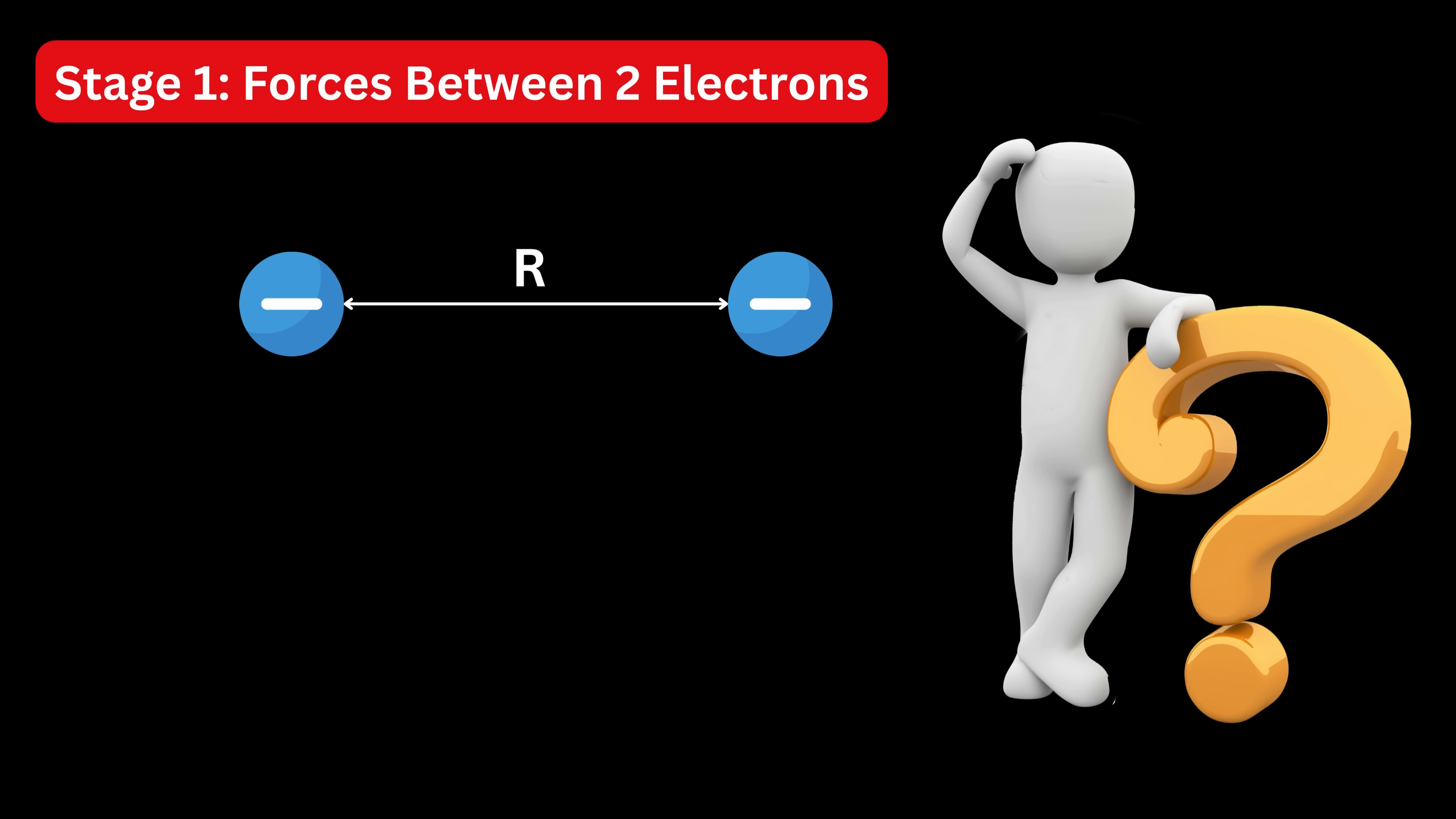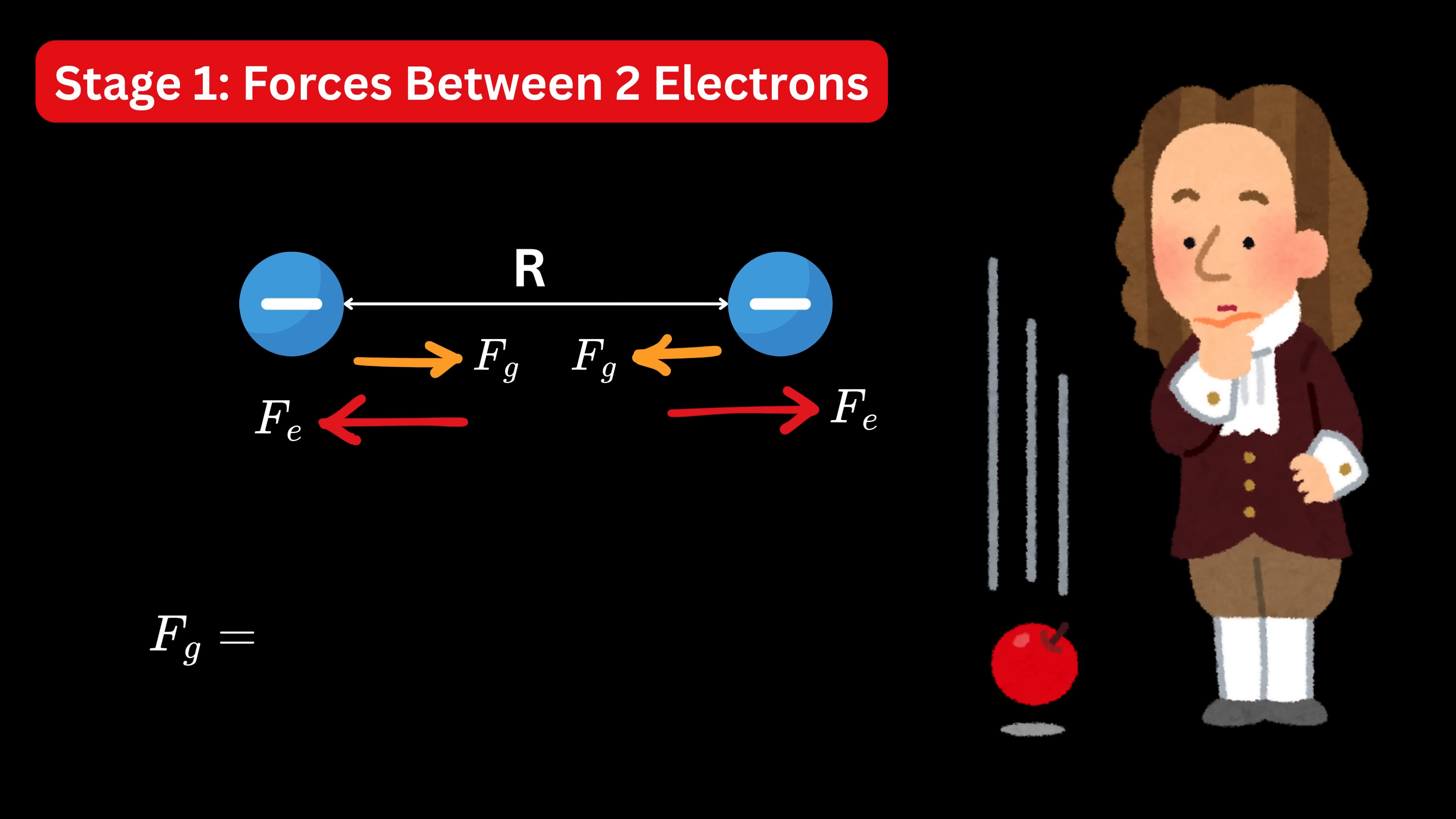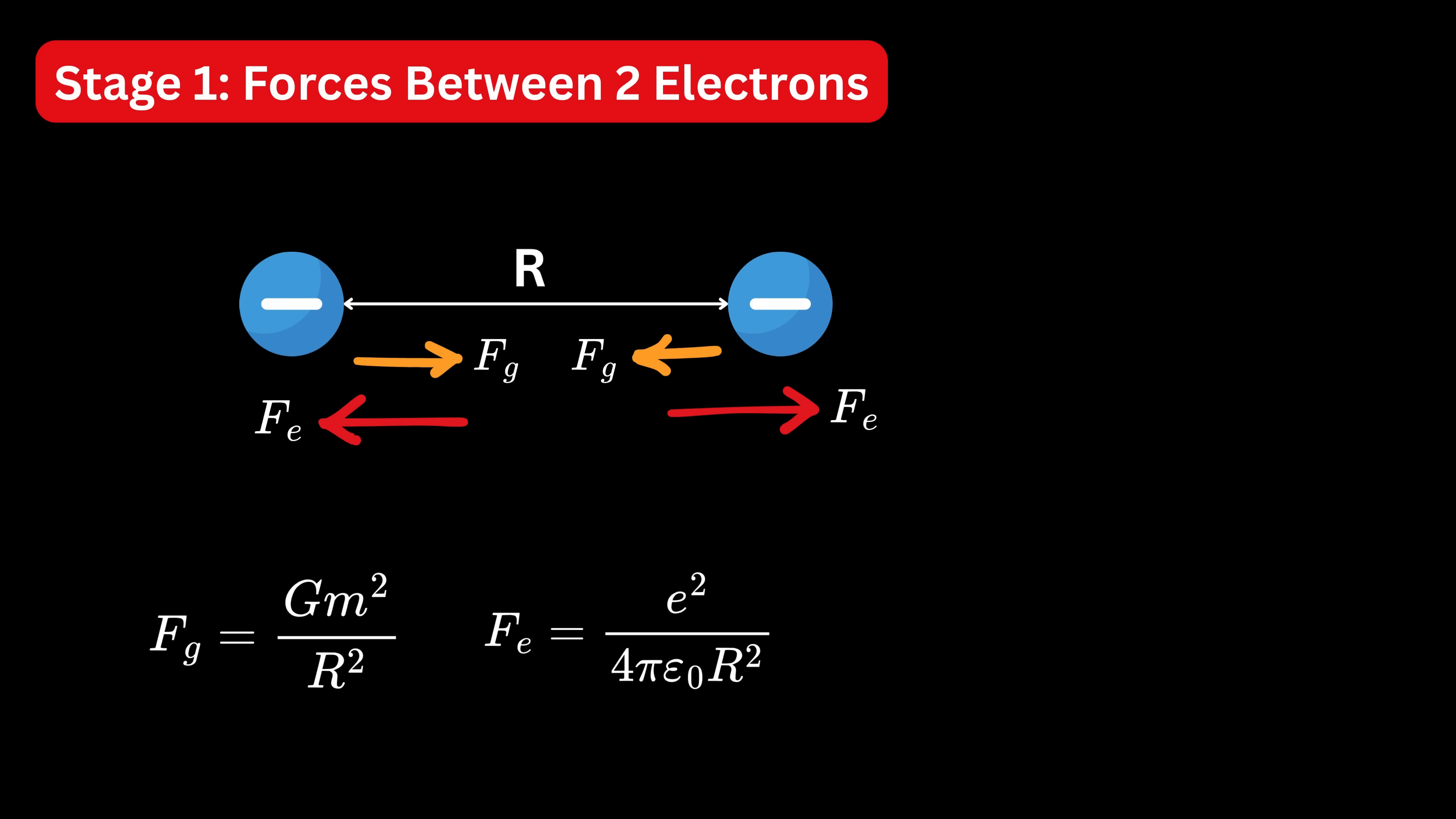Two main forces that act on them are the force of gravity and electric repulsion. Gravity tries to pull them together, and because they are like charges, they repel each other. The gravitational force between two masses is given by Newton's gravitational law, which tells us the force of gravity is G times m squared divided by R squared. The electric repulsion, on the other hand, comes from Coulomb's law, which says the electric force is e squared divided by 4 times pi times epsilon naught times R squared.